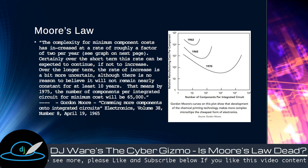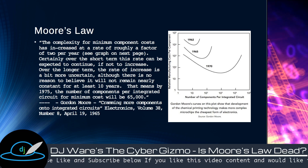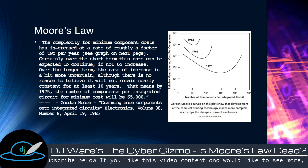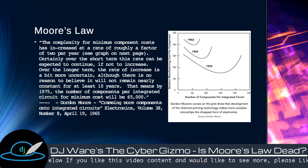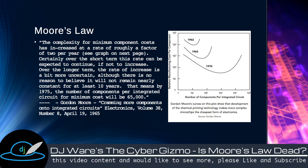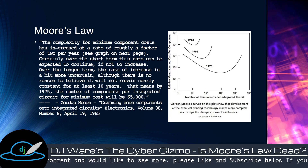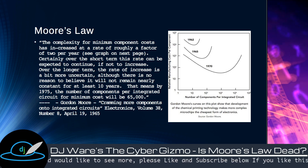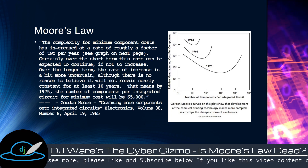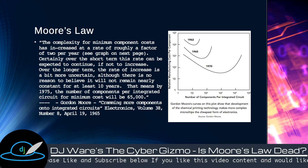He also added this one line: that the number of components per integrated circuit for minimum cost — in other words, you could increase the density of the transistors, but you would end up paying more to do that in the fab, and then you would have to pass that cost on to the people buying your chip. So what he was really talking about was getting the density of the chip at the lowest cost — the most competitive position when selling your product.